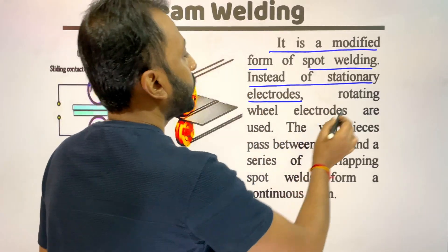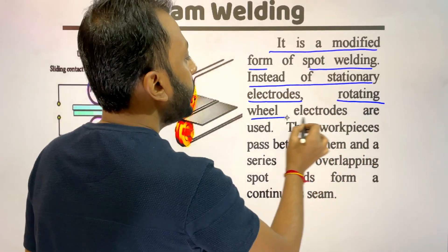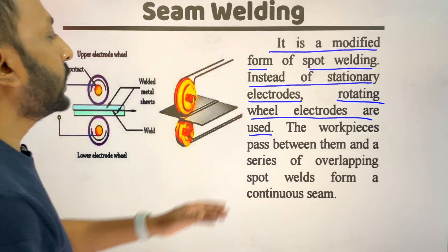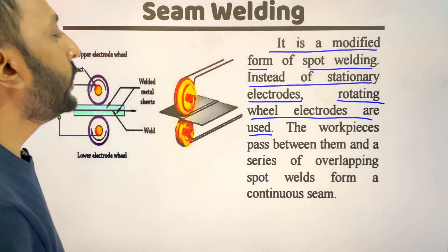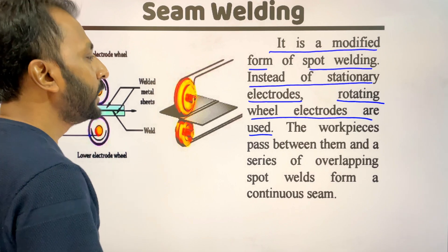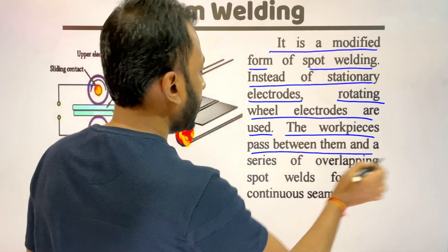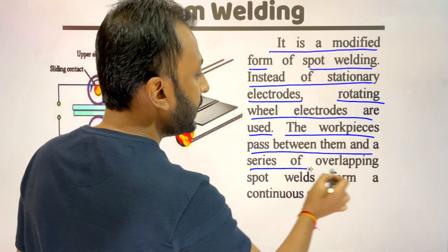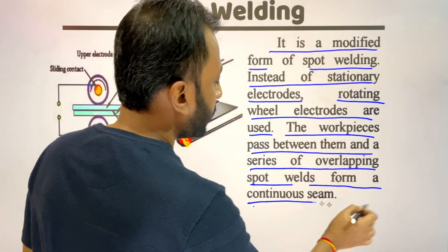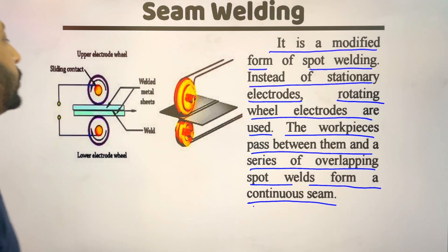In seam welding process, rotating wheel electrodes are used. The work pieces pass between the rotating wheels and a series of overlapping spot welds form a continuous seam.